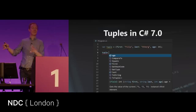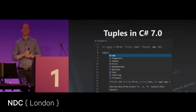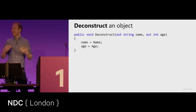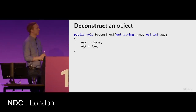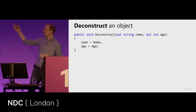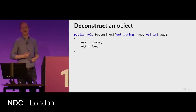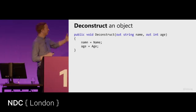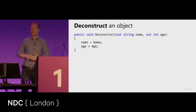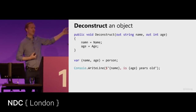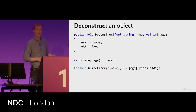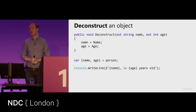With tuples introduced into the language, we can now look at how types can be deconstructed and turned into something that looks like tuples. This introduced the concept of adding a method to any given type called Deconstruct. As long as you have a method called Deconstruct with a few out parameters, you can take an object and pull it apart in different ways. On a person class, that means you can take an instance of a person and deconstruct it into two new local variables.